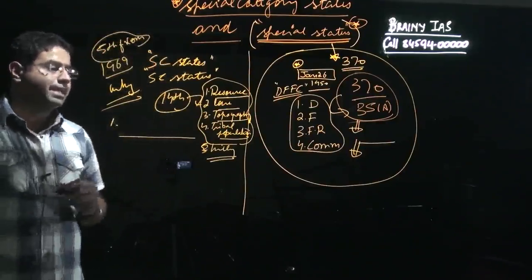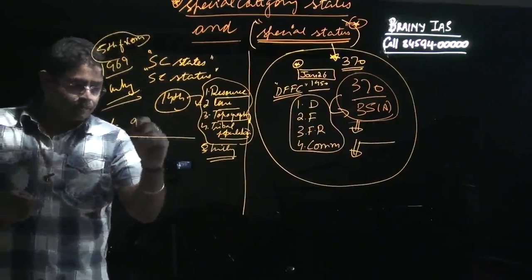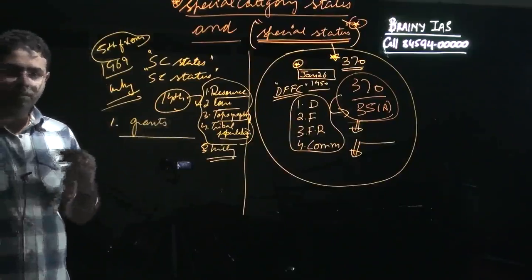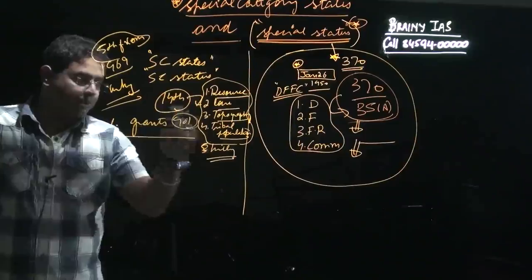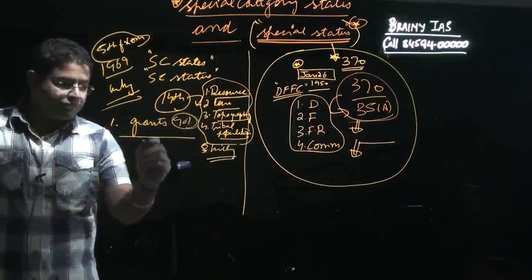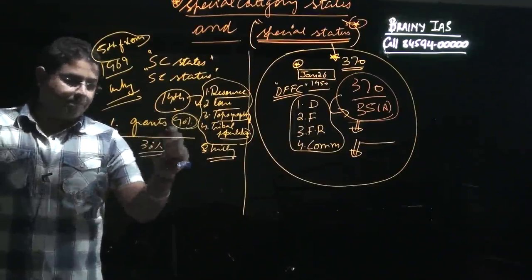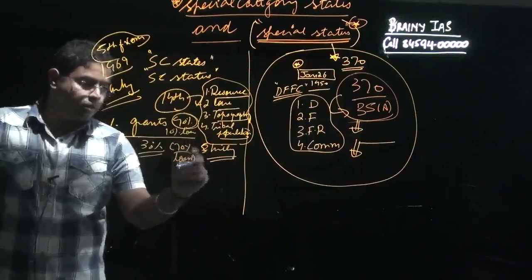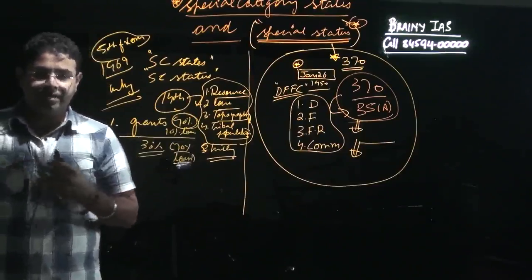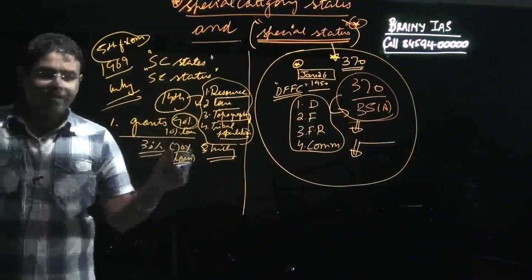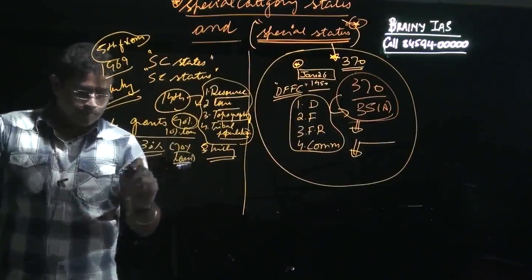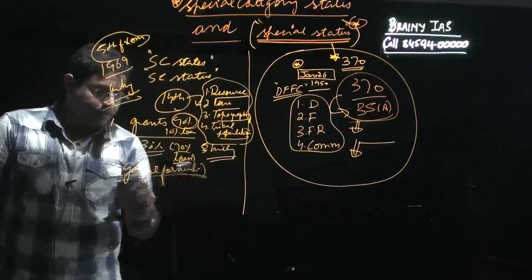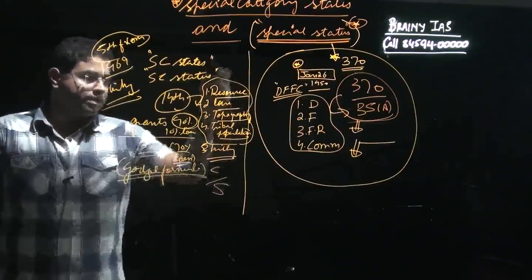As per the special category status, these states were given more in terms of grants. Whatever government policy or program was there, 90% of it was financed by way of grants, while for normal states the grant rate was just 30%. Only 10% was given in terms of loans to special category states, whereas for normal states it was 70% in terms of loans. How resources were further divided was decided by the Gadgil formula.